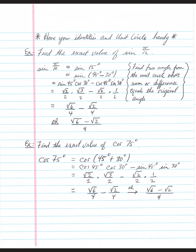Once expanded, it's not so bad. Sine(45°) = √2/2, cosine(30°) = √3/2 — pulling these from the unit circle. Cosine(45°) = √2/2 and sine(30°) = 1/2. This gives √6/4 minus √2/4, which can be written as one fraction: (√6 − √2)/4.